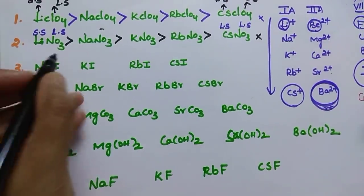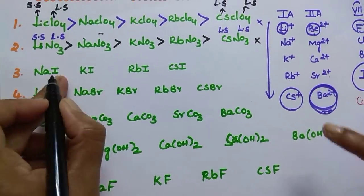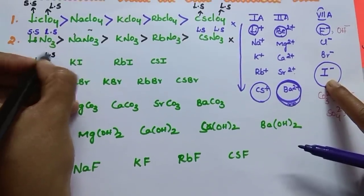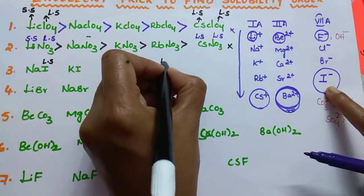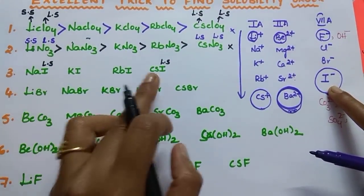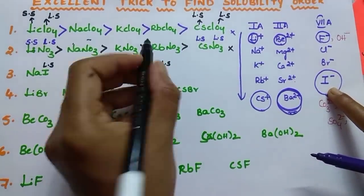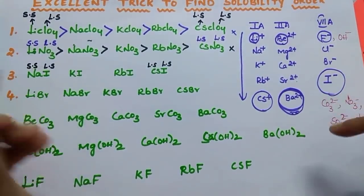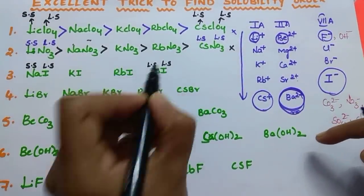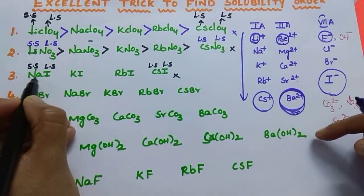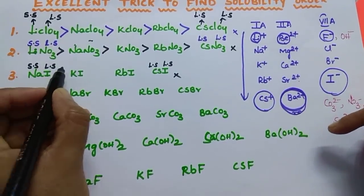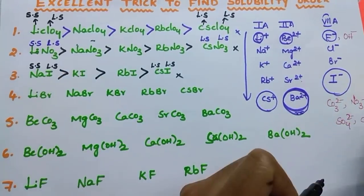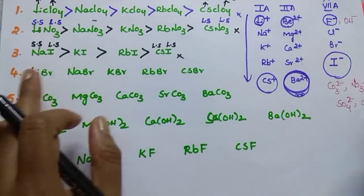For NaI vs CsI: I⁻ is a large-size anion. Cs⁺ is large size and Na⁺ is small size. Large cation + large anion gives less solubility; small cation + large anion gives more solubility. So NaI has more solubility than CsI.